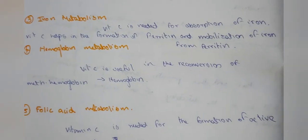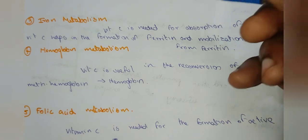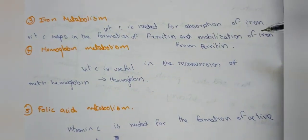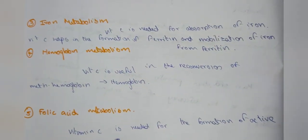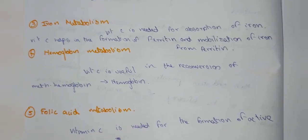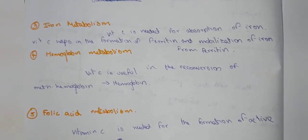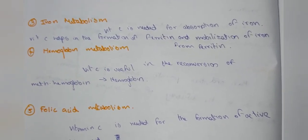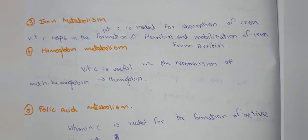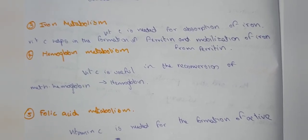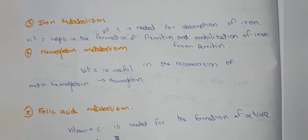In iron metabolism, Vitamin C is needed for the absorption of iron. It helps in the formation of ferritin and the mobilization of iron to form ferritin.